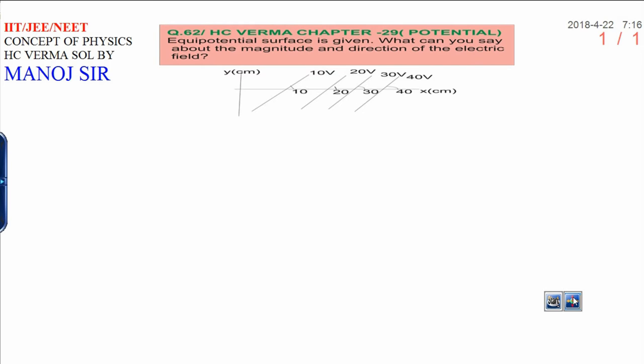Dear students, today I am going to discuss a very important question for you from the H.C. Verma chapter number 29, electric potential. This concept will help you in the IIT-JEE and NEET. The question is: an equipotential surface is given. You can check in the diagram. Equipotential surface is given and what can you say